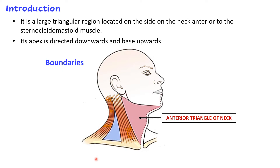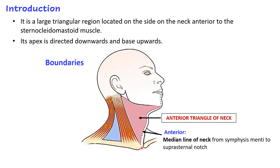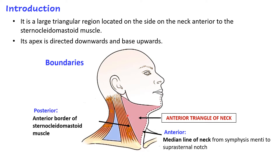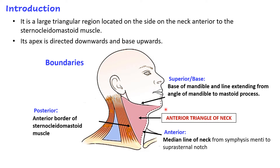The anterior boundary is formed by the midline of the neck, which extends from the symphysis menti to the suprasternal notch just above the manubrium sterni. The posterior boundary is formed by the anterior border of the sternocleidomastoid muscle. The base or superior boundary is formed by the inferior border of the mandible and an imaginary line connecting the angle of the mandible to the mastoid process. The apex, directed downwards, is at the suprasternal notch.